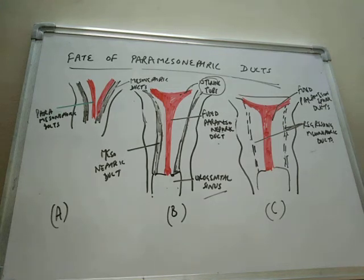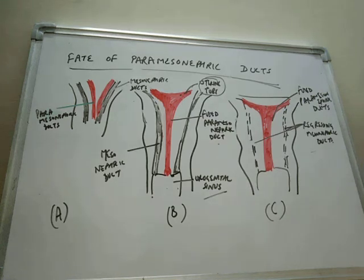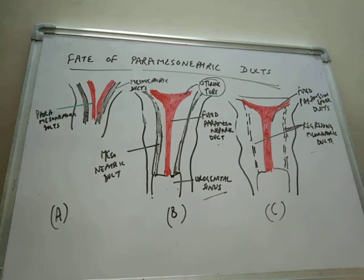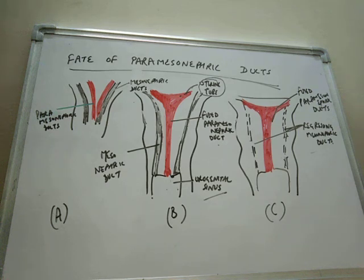In males, the paramesonephric ducts remain rudimentary and the greater part of each duct disappears. The cranial end of each duct persists as a small rounded body attached to the testis, known as the appendix of the testis. Thank you everyone — if you like this video, please subscribe to my YouTube channel.